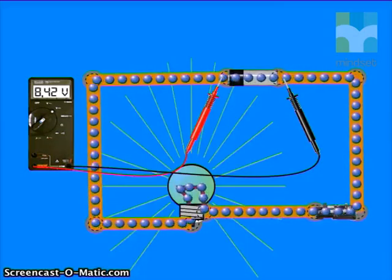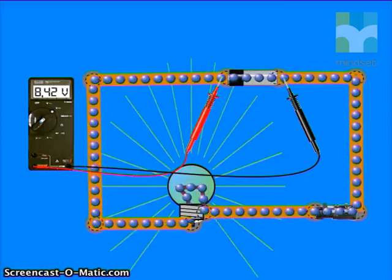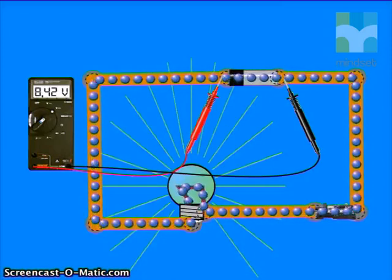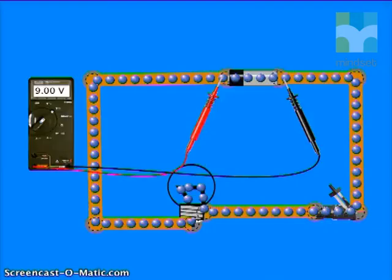The switch has been closed because the light bulb is shining. Notice that the voltmeter reading is now lower — it reads 8.42 volts. The original voltage measured across the cell is called the EMF of the cell — this is the voltage across the cell when there is no current in the circuit.